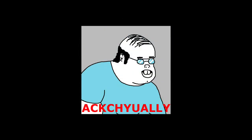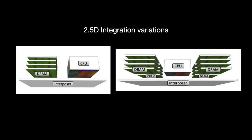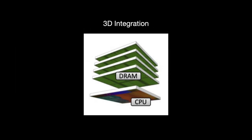In general, 2.5D integration co-packages dissimilar parts — logic, memory, or whatever — side-by-side on top of a connective substrate. 3D integration, on the other hand, co-packages dissimilar parts in a vertical stack, connected together using a variety of technologies.